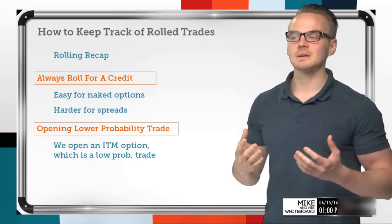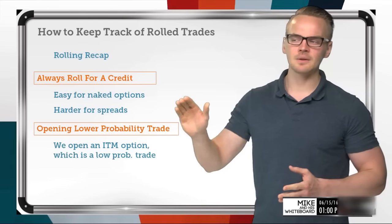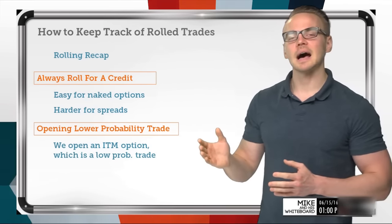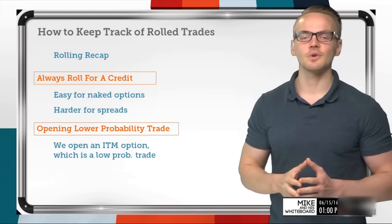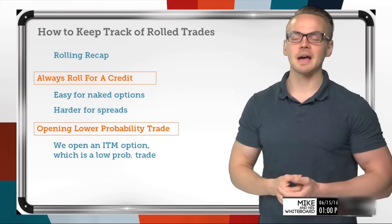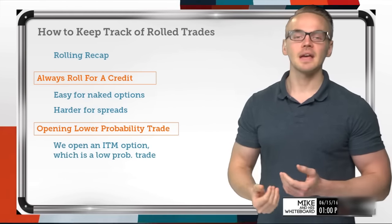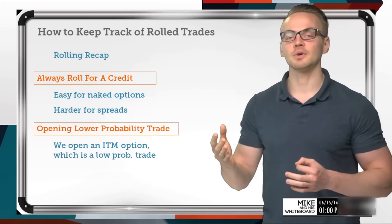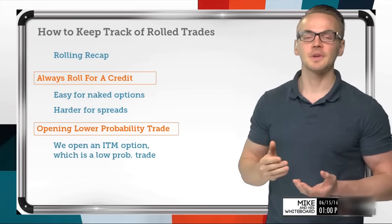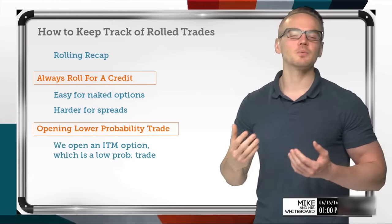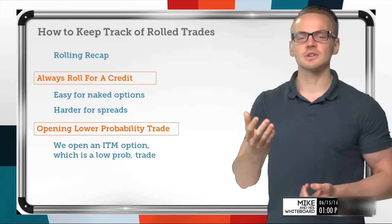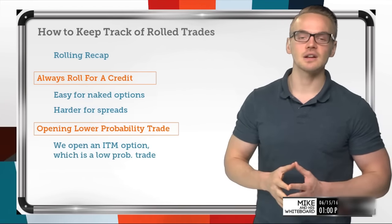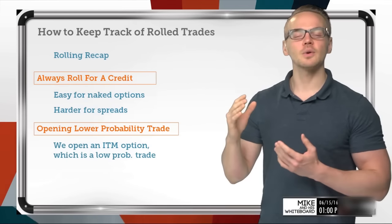When we roll for a credit it's going to be easier for some options and harder for others. With naked options it's actually a lot easier to roll for a credit — I can buy back the option I'm currently in and open up a new option in the next expiration cycle. When dealing with a naked put or naked call, it's going to be really easy to get a credit because, from an insurance contract perspective, longer-dated options have more time and are therefore more valuable.